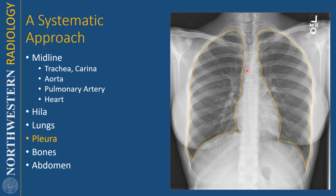Next I look at the pleura. The first thing I do is look for a pneumothorax, which is an abnormal air collection between the visceral and parietal pleura. In a patient who is standing up or sitting up, air is usually going to collect at the lung apex. Then I follow the pleura down, making sure there are no undulations — that could indicate either a loculated pleural effusion or perhaps a rib fracture. Then I follow it down to the costophrenic angles, where the diaphragm meets the chest wall. This angle should be sharp — if it's blunted or there's a meniscus, that is a sign of pleural effusion.